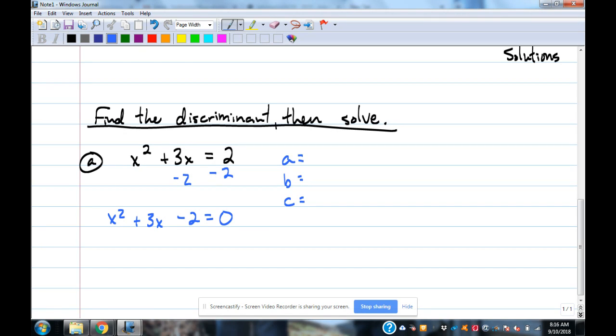So what's A in this one? It's whatever's in front of X squared. So what's in front of X squared? 1. What's B? 3. And C? Negative 2. Make sure you carry that sign with you when you do that. That's the common mistake is to just pull a 2 instead of taking the negative with it because it's negative 2. So A is 1, B is 3, and C is negative 2.